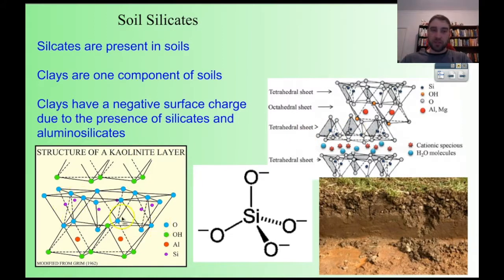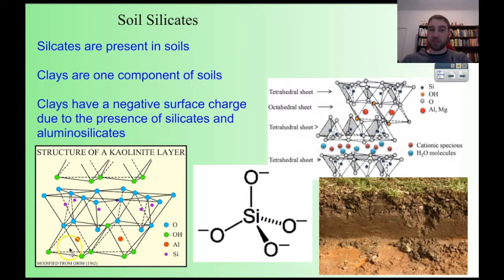In kaolinite we can see there are all these oxygens, and many of those have a negative charge — that's what generates that negative surface charge. It's all made up of the silicate anions, the silicate tetrahedra. They're joined in particular ways, and we have aluminiums incorporated into the structures as well — hence alumino-silicates — and they have this negative surface charge.